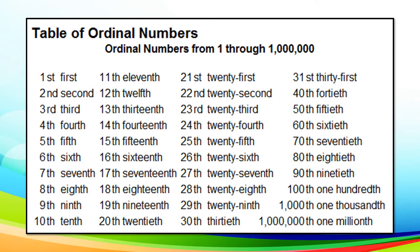Let us read and study the following ordinal numbers. As you can see, the ordinal numbers are written in symbol and words. We have 1st, 2nd, 3rd, 4th, 5th, 6th, 7th, 8th, 9th — 9th is spelled out without E — 10th, 11th, 12th, 13th, 14th, 15th, 16th, 17th, 18th, 19th, 20th. If the word ends with Y, change that Y into IE, then add TH.